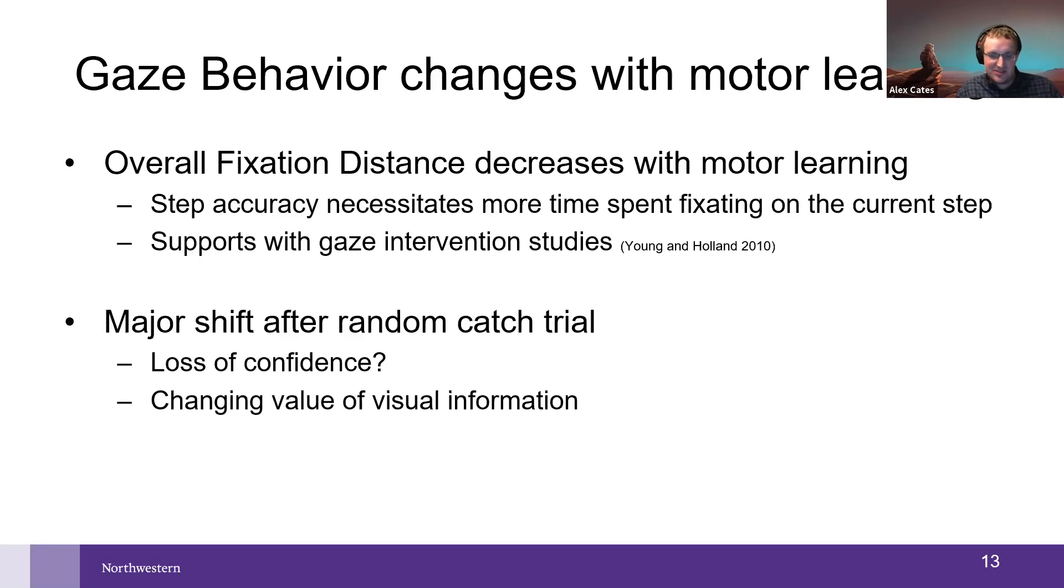A couple of theories that I have. It might be a loss of confidence. You can imagine that in the beginning as they're getting more correct steps, they get more confident. They feel like they can look up and observe the rest of the world, and then that would reset every time they make an error. They have the catch trial and they make a bunch of errors, and at that point they're no longer confident. Another theory I have is that the value of the different visual information is changing, because as they learn the pattern, they may not need to look farther ahead to plan out their steps. They already know what steps are coming because it's a pattern. I don't really know the answer to these questions, but these are thoughts that I'm having.